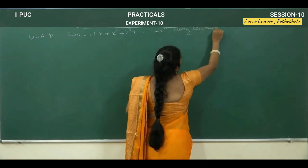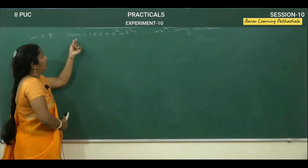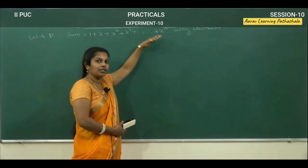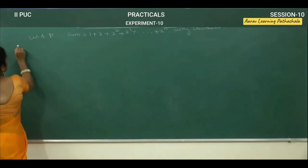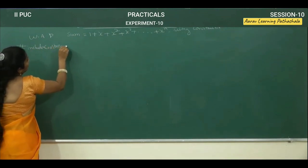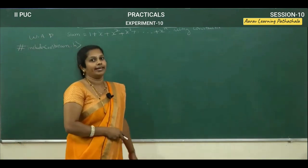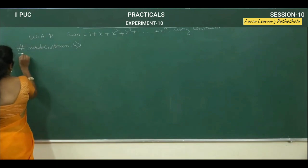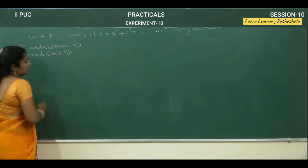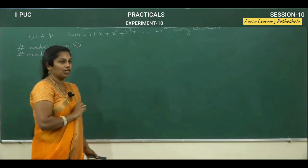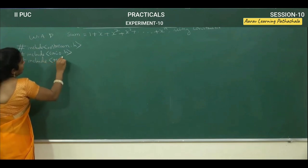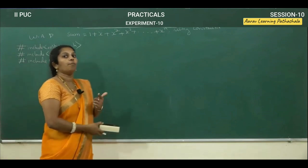Using constructor — how to write the program for this? See the equation: sum equals 1 plus x plus x square plus x cube up to x to the power of n. This is the series. For this, we have to write the program. As usual, first start with the header file: #include iostream.h — this is the supporting header file for cin as well as cout. Next header file: #include conio.h — this is the supporting header file for clear screen as well as getch function. Next: #include math.h — this is the supporting header file to perform the power function.